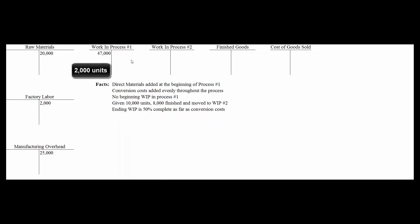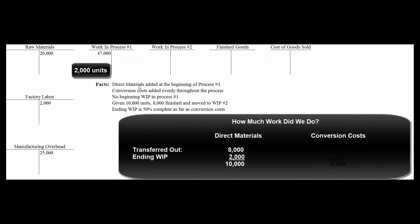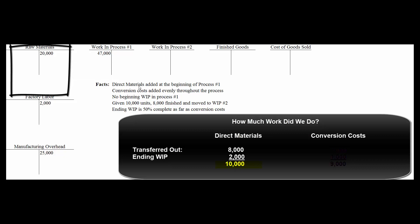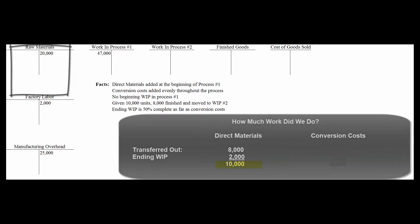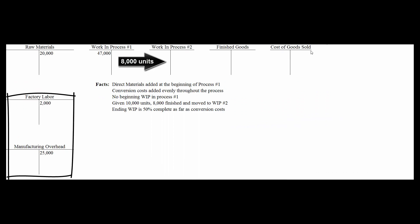Those 2,000 units left in work in process — since direct materials are added at the beginning of the process, there are no more materials to add, so those 2,000 units are 100% complete as far as materials go. So when we look at the amount of work done from the point of view of direct materials, we did 10,000 equivalent units worth of work.